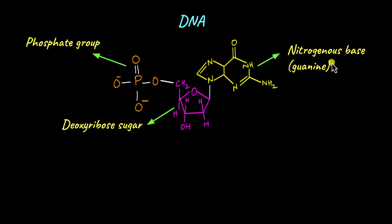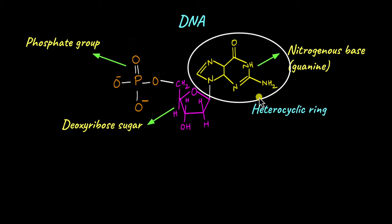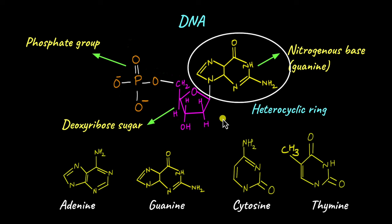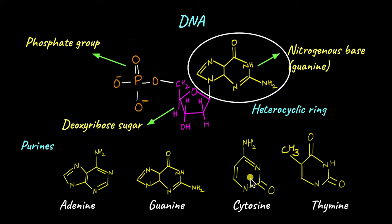Nitrogenous bases, which are found in both DNA and RNA, are made up of heterocyclic rings — these ring-shaped structures are called heterocyclic rings. In DNA, four nitrogenous bases are found: adenine, guanine, cytosine, and thymine. Adenine and guanine have two fused heterocyclic ring structures and are known as purines. Cytosine and thymine have just one heterocyclic ring and are known as pyrimidines.